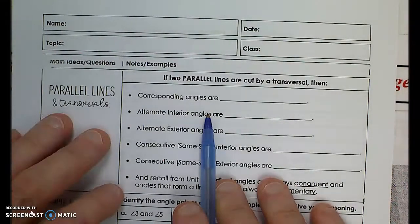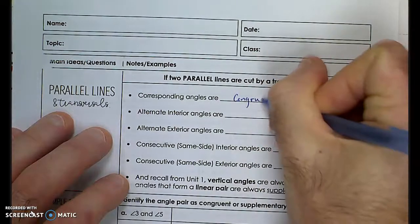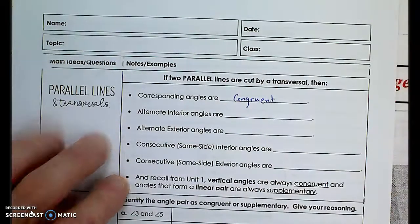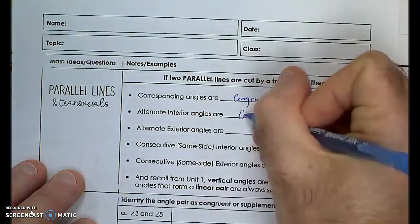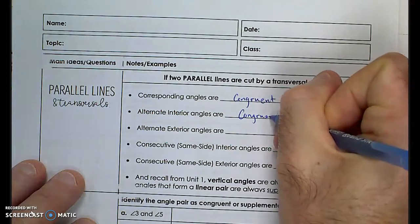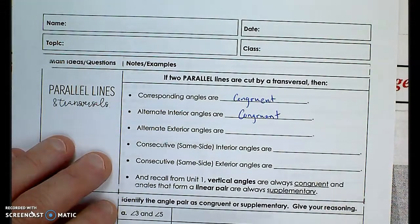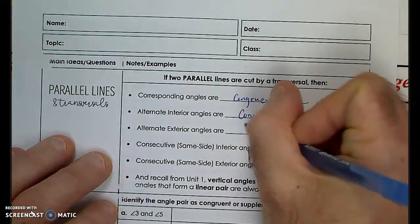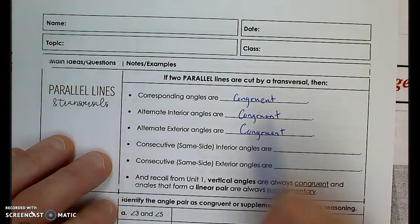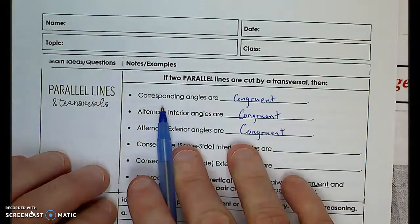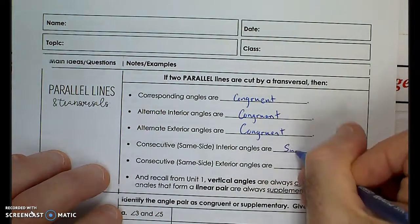Corresponding angles are congruent — they're the same, of equal measure. Alternate interior angles are also congruent: alternate on opposite sides of the transversal and on the inside of the two lines being crossed over. Alternate exterior angles are also congruent. So if it says alternate, they're going to be congruent, and corresponding are also congruent. Consecutive — if they're on the same side at all — they're going to be supplementary.